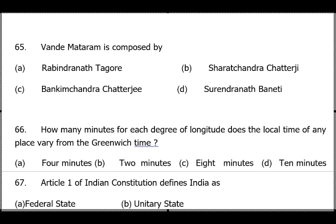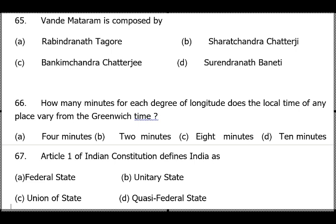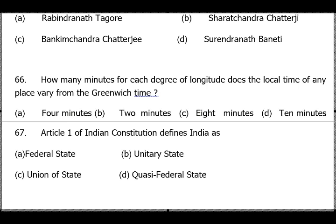Question 66: One degree difference in longitude equals four minutes. As studied in geography, when crossing the Greenwich Meridian, one degree equals four minutes of time. Answer is option A.